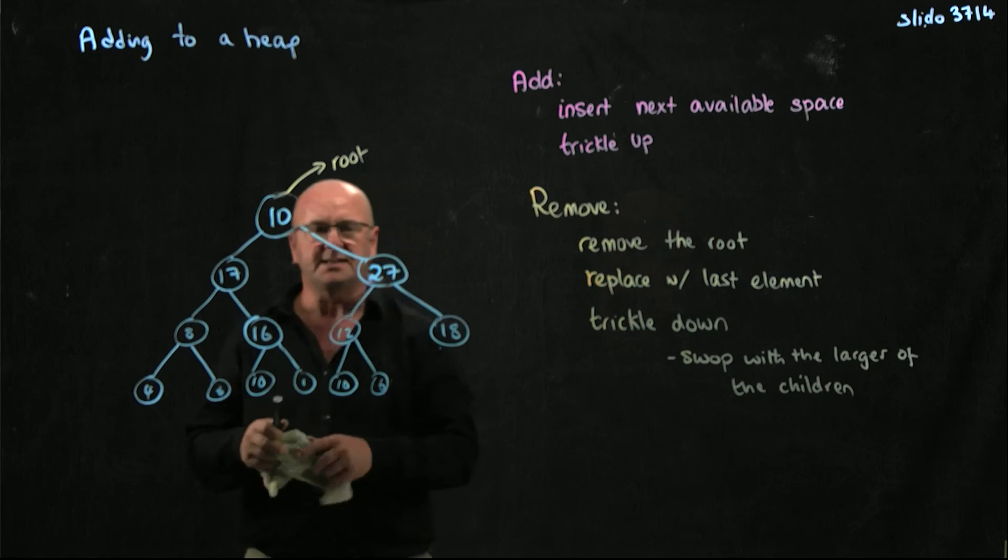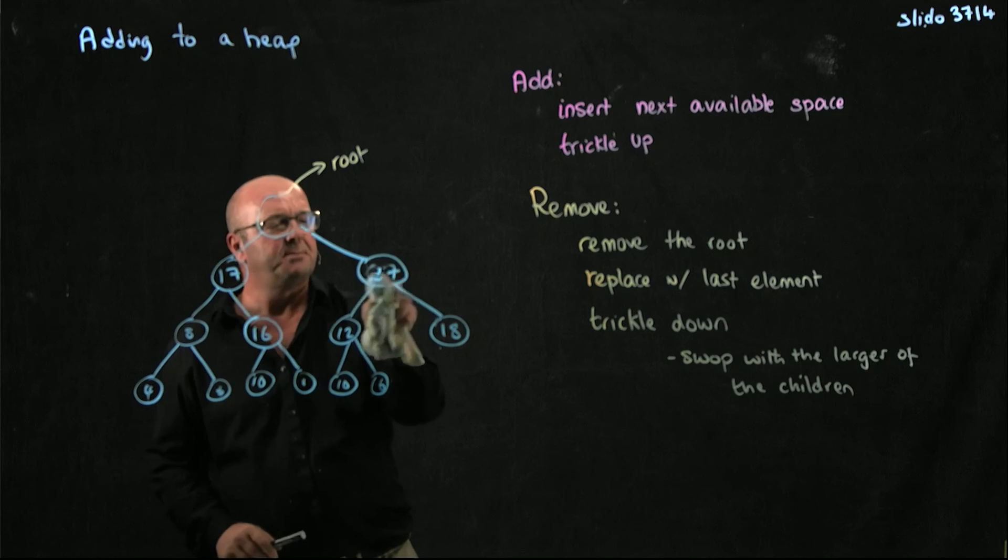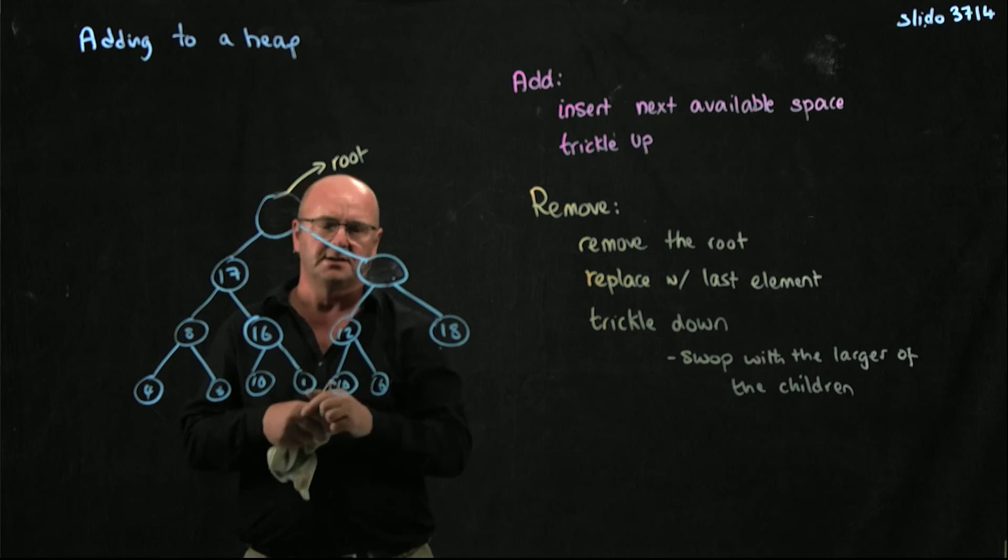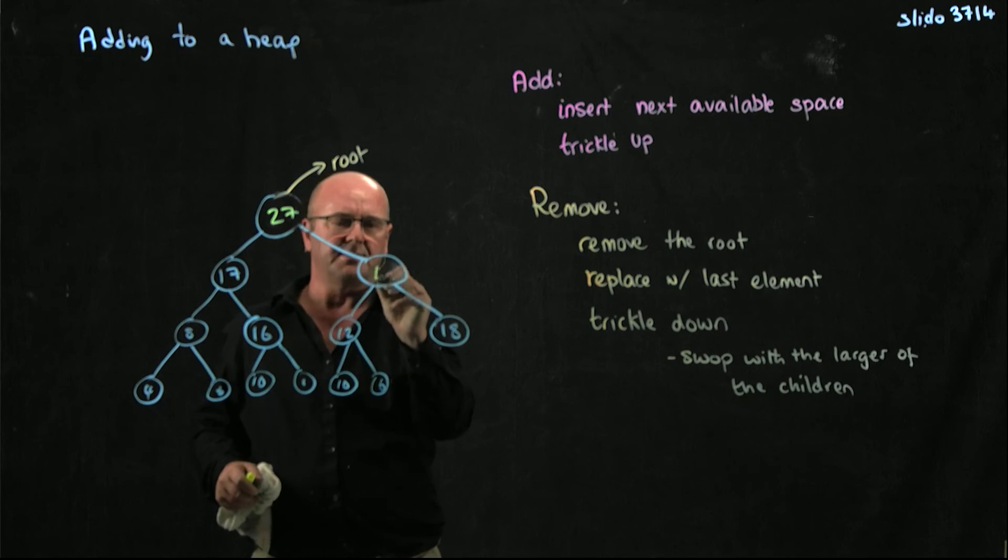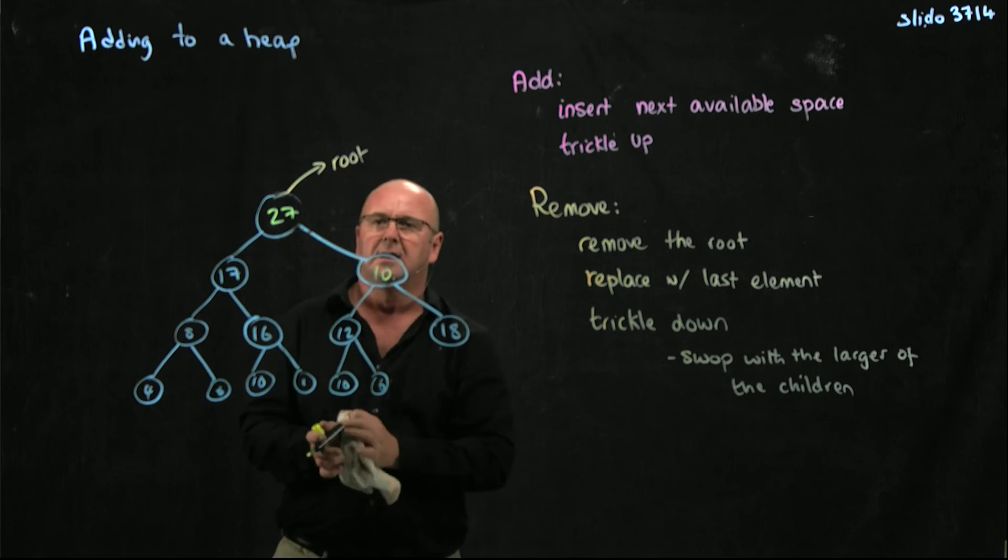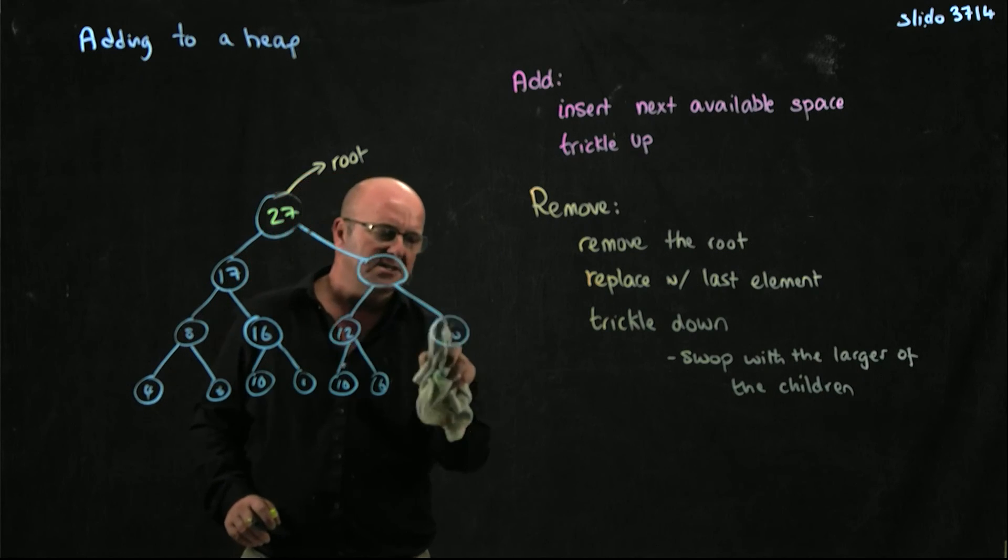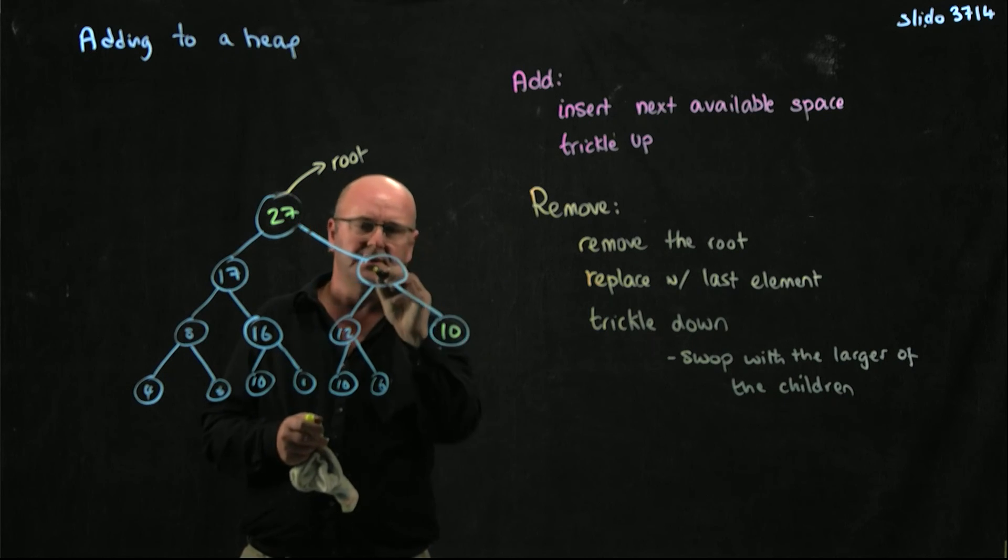So what I'm going to do is I'm going to take my 10, I'm going to swap it with the 27 because that's bigger than 17. So now I've got 27 in my root, and I've got my 10 here. And then I take my 10, and I trickle it down, and I swap it with the larger of the two children so that it ends up here.